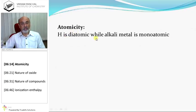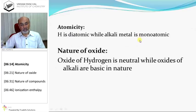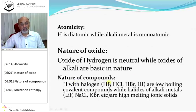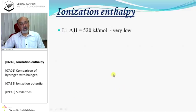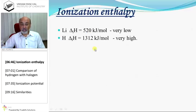Hydrogen is diatomic while alkali metals are monoatomic. Nature of oxide: the oxide of hydrogen (H2O) is neutral, while oxides of alkali metals are basic. Hydrogen with halogens forms low-boiling covalent compounds, while halides of alkali metals are high-melting-point ionic solids. Ionisation enthalpy: lithium's first ionisation enthalpy is 520 kJ/mol, which is very low, but hydrogen's ionisation enthalpy is 1312 kJ/mol, which is very high.